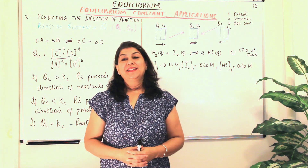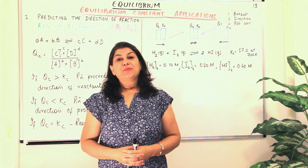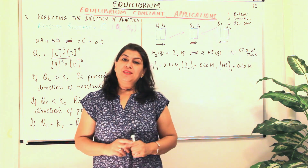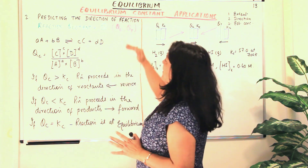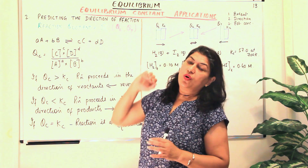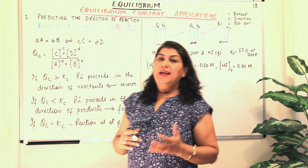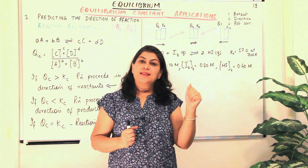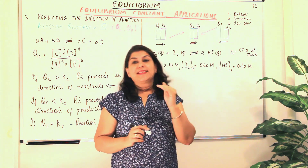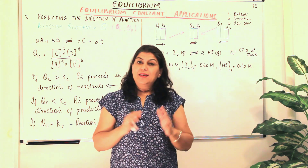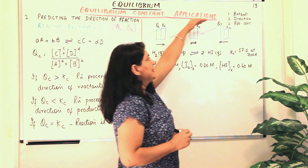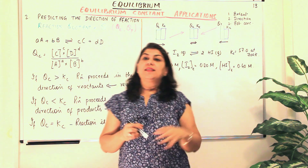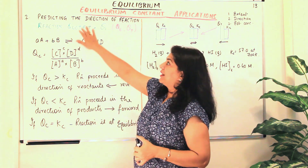Hello, I'm Seema and welcome to part 13 of the chapter Equilibrium. In part 12, we were discussing the applications of equilibrium constant, and I told you about the first application: using equilibrium constant, we can predict the extent of a reaction. In this video, I'm going to tell you about the second application of equilibrium constant, which is to predict the direction of the reaction.